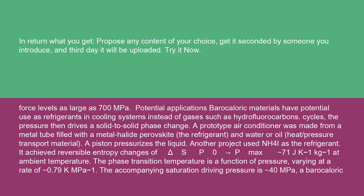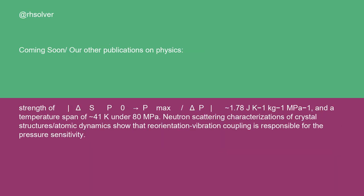Another project used NH4I as the refrigerant. It achieved reversible entropy changes of ΔS = 71 J·K⁻¹·kg⁻¹ at ambient temperature. The phase transition temperature varies at a rate of 0.79 K·MPa⁻¹. The saturation driving pressure is 40 MPa, with a baricaloric strength of ΔS/ΔP = 1.78 J·K⁻¹·kg⁻¹·MPa⁻¹ and a temperature span of 41 K under 80 MPa.